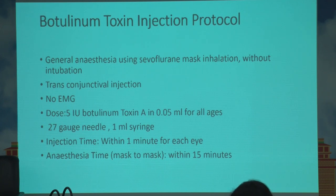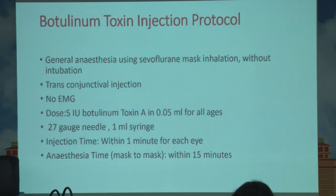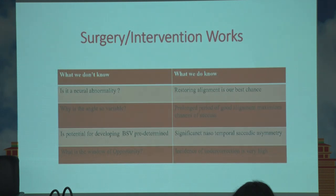The general protocol for Botox injection involves using a sevoflurane mask — no full anesthesia is required, and no EMG is needed. It can be given either as a transconjunctival injection or by dissecting the conjunctiva and directly injecting into the belly and tendon of the muscle. The currently propagated dose is 5 international units of Botox in each medial rectus, equal to 0.05 ml for all ages, using a 27-gauge, one-millimeter needle with a one-ml syringe. Injection time is only one minute, so the duration of anesthesia is short.